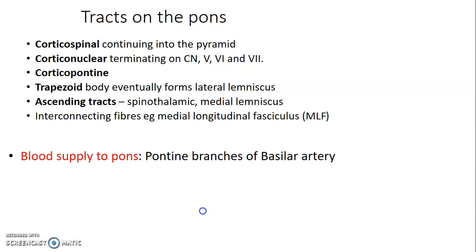The tracts located in the pons include: the corticospinal tract, which continues into the pyramid of the medulla; corticonuclear fibers from the cerebral cortex to the nuclei of the cranial nerves; corticopontine from the cortex to the pons; trapezoid bodies forming the lateral lemniscus; and ascending tracts — the spinothalamic from spinal cord to thalamus, and the medial lemniscus from nucleus gracilis and cuneatus to the thalamus.